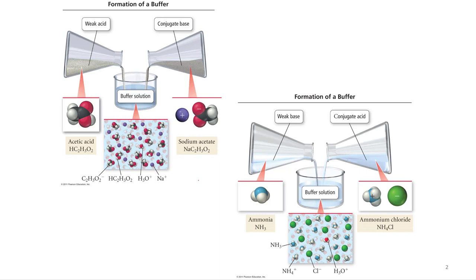You can make a buffer with HF and fluoride. You could, if you wanted to, make a buffer with acetic acid and sodium acetate. Acetic acid is the weak acid; sodium acetate, the acetate, is its conjugate base - that's the weak base.